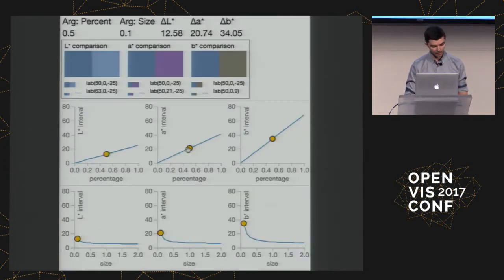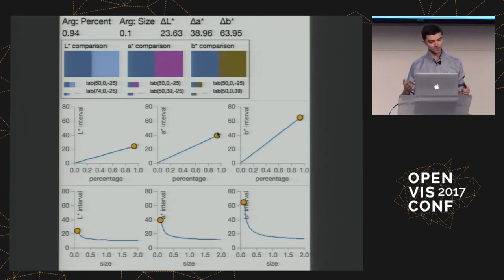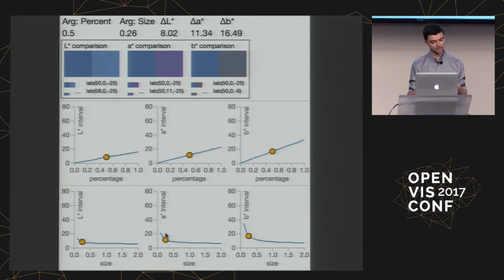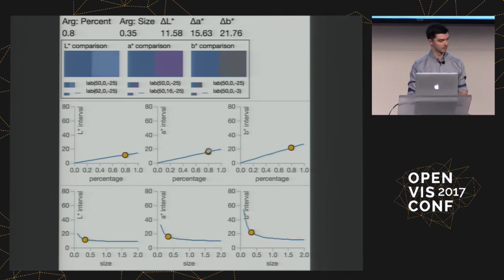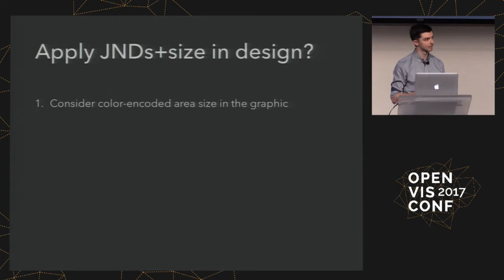I've recorded a video showing this online. You can see the arguments: lowering the percentage makes the interval go down and colors less discriminable; increasing it makes them more discriminable. For size, it's a diminishing returns curve — if a mark is really small and we make it a little bigger, we get a much greater difference in discriminability, but that evens out after a certain point.